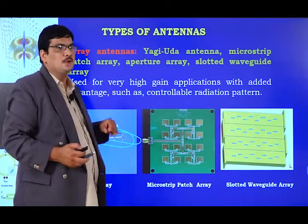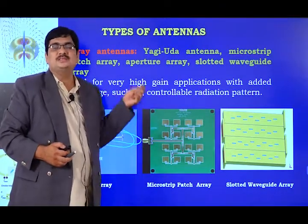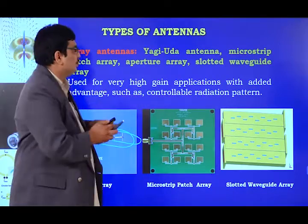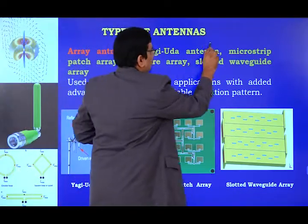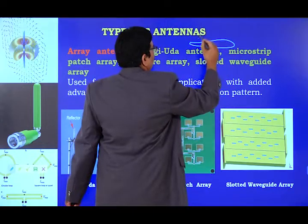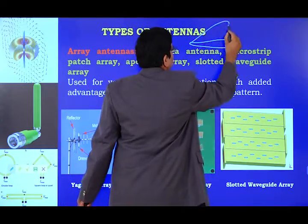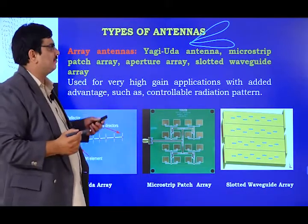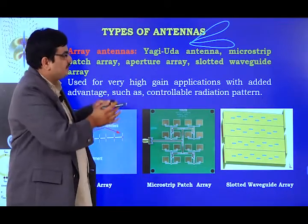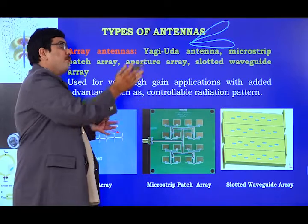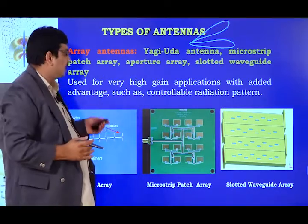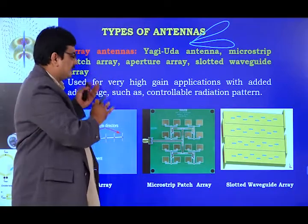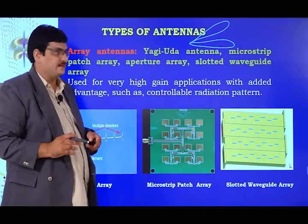The second advantage of array antennas is that we can use them for phased beam purposes. Suppose you want to direct your antenna in a particular direction — by using attenuators and phased attenuators, we can rotate our beam to whichever direction is required. That is the advantage of array antennas: we can use them as phased array antennas.